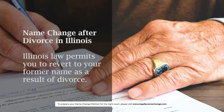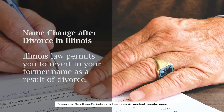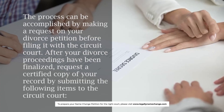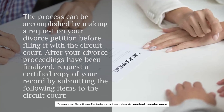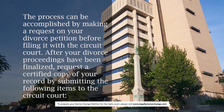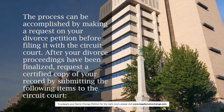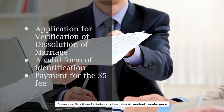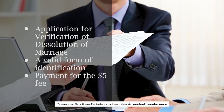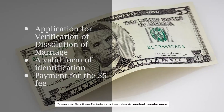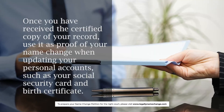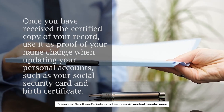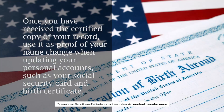Name change after divorce in Illinois: Illinois law permits you to revert to your former name as a result of divorce. The process can be accomplished by making a request on your divorce petition before filing it with the circuit court. After your divorce proceedings have been finalized, request a certified copy of your record by submitting: an Application for Verification of Dissolution of Marriage, a valid form of identification, and payment of the $5 fee. Once you have received the certified copy, use it as proof of your name change when updating your personal accounts, such as your social security card and birth certificate.